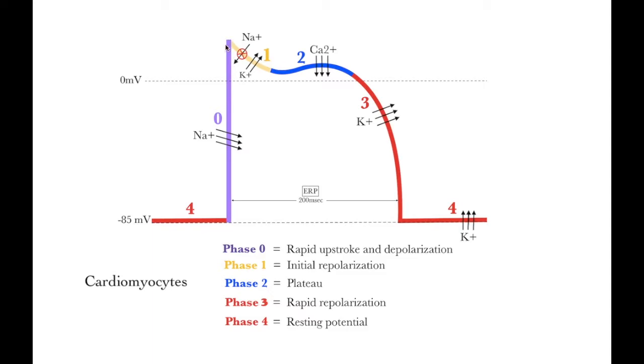Phase 1: Initial Repolarization. This phase begins with the rapid inactivation of the sodium channels, reducing the movement of sodium into the cell. At the same time, potassium channels open and close rapidly, allowing for a brief flow of potassium ions out of the cell, making the membrane potential slightly more negative. This is referred to as a notch on the action potential waveform.